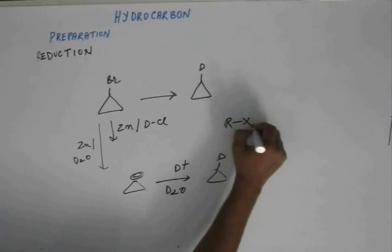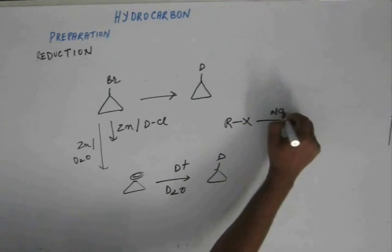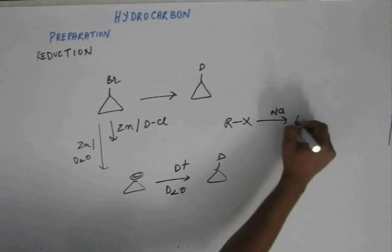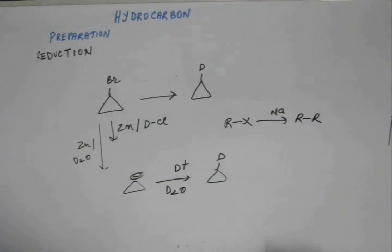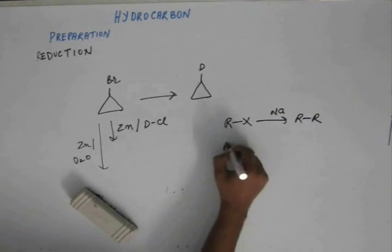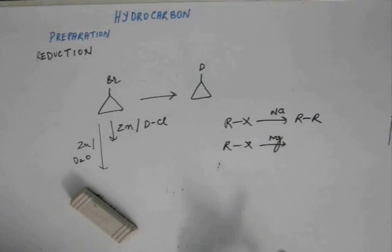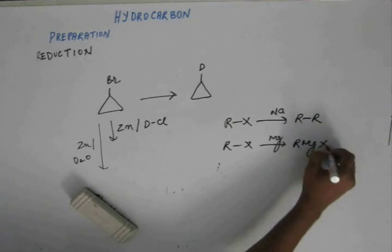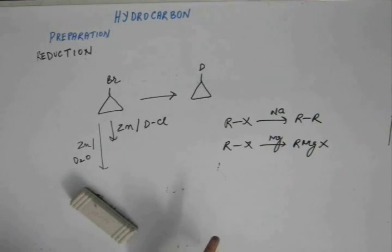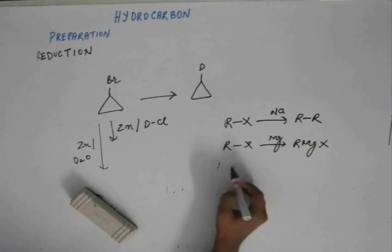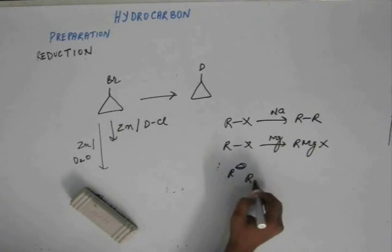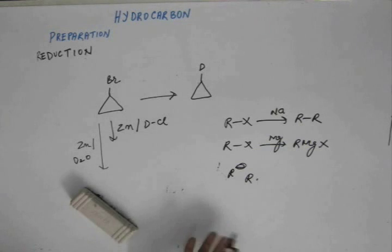For example, if you have R-X, if you add sodium to this, this would be a Wurtz reaction and the product would be R-R. The reason being, magnesium will release more number of electrons and magnesium will form directly R- rather than R· as happens in the case of sodium.